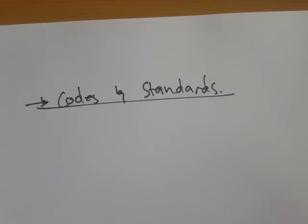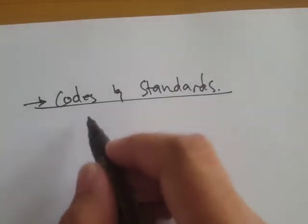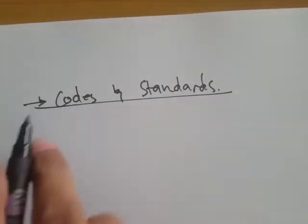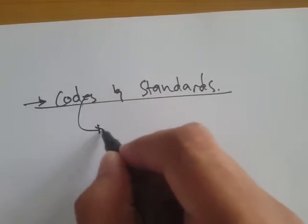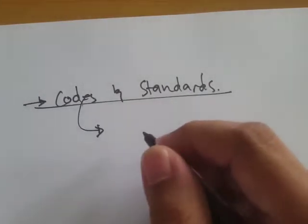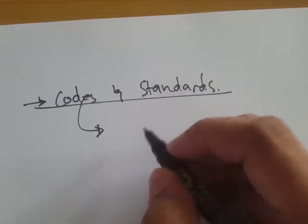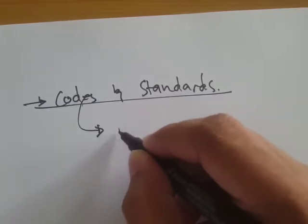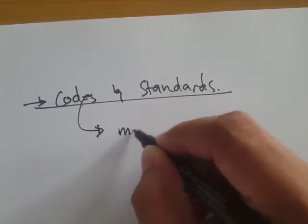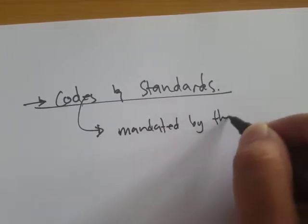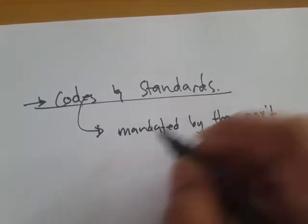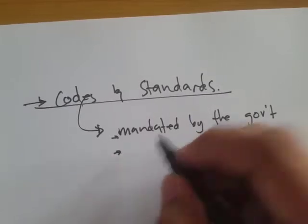If we deal with construction or building designs, certain codes and standards must be followed. Let's define the difference between codes and standards. When we say codes, it's actually mandated by the government for the safety of the public.